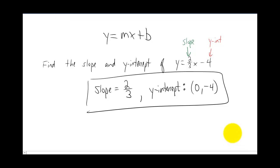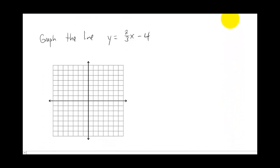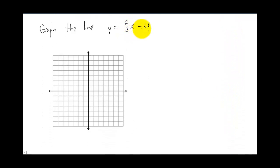Okay, well let's take all that information and let's actually graph this line. Same line. The slope is two-thirds, the y-intercept is negative four. So the way that you would graph this is you start with the y-intercept. You count down to the point zero, negative four.